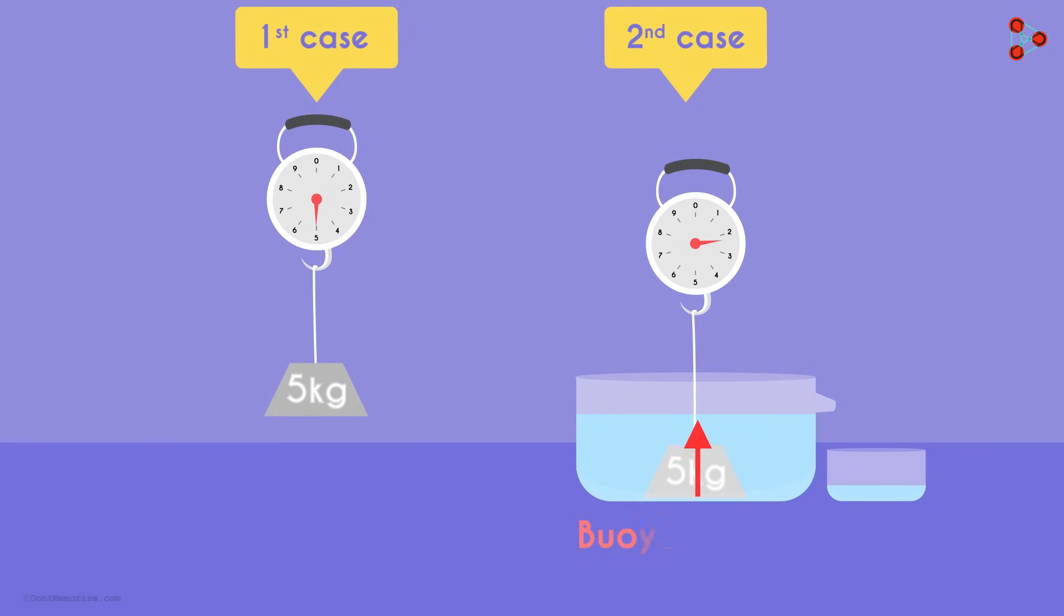Why is that? It is because of the buoyant force acting on the object. You would have also noticed that some water was displaced. Now in this context, we can say that the weight of this displaced water is equal to the magnitude of the buoyant force acting on the object. That's the Archimedes principle.